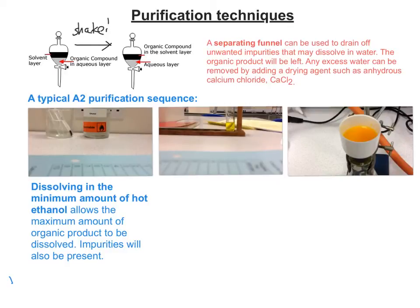I'm going to take you through a typical purification sequence recorded in preparation for an A2 practical. Each video clip is about a minute long. First, we dissolve the product in the minimum amount of hot ethanol — the minimum amount means we capture as much of the organic product as possible without swamping it with solvent, since we have to get rid of the solvent later. We use hot ethanol because things dissolve in hot solvents better than cold solvents — similar to making a cup of tea using hot water.